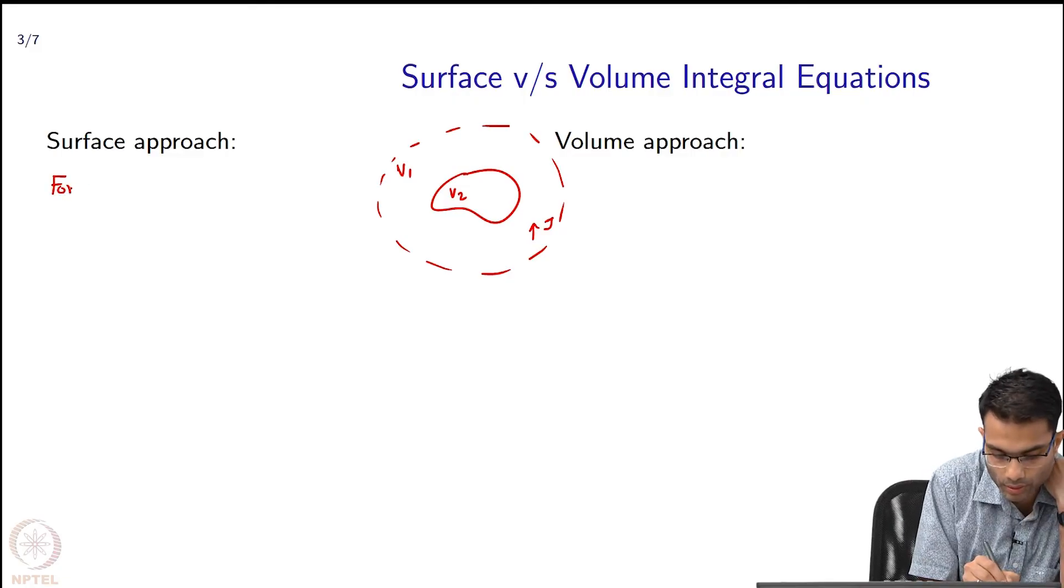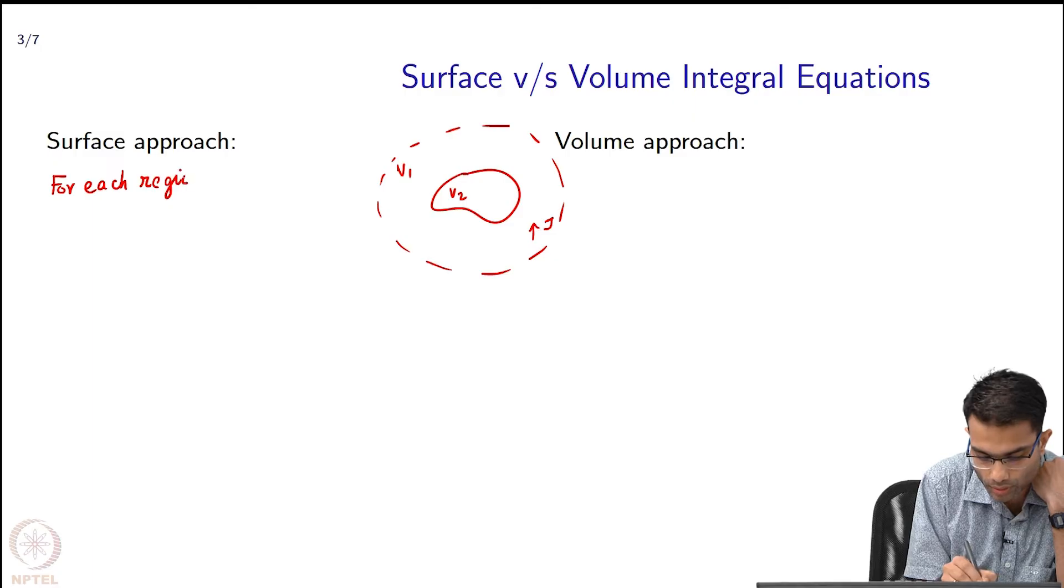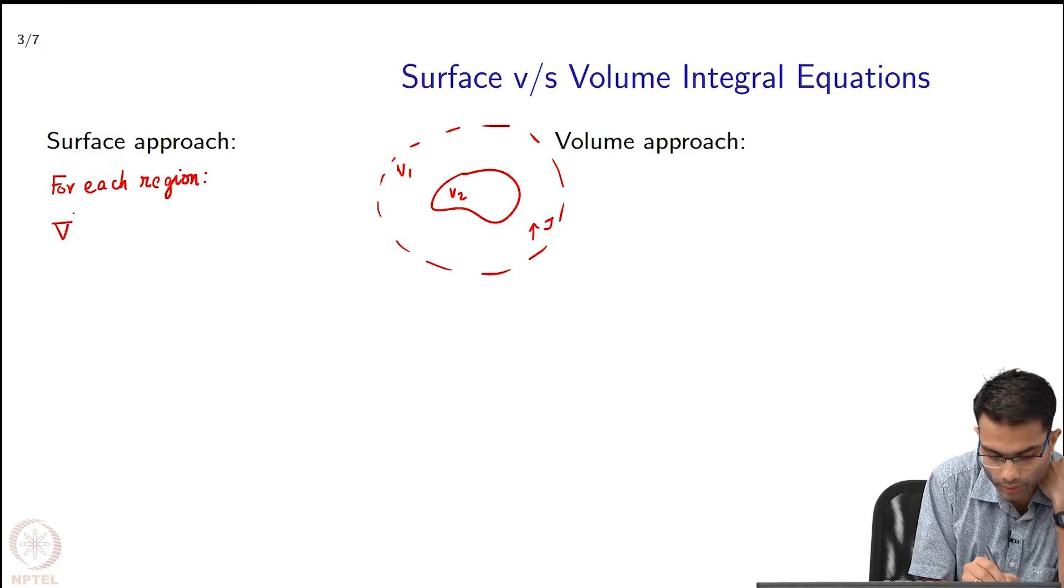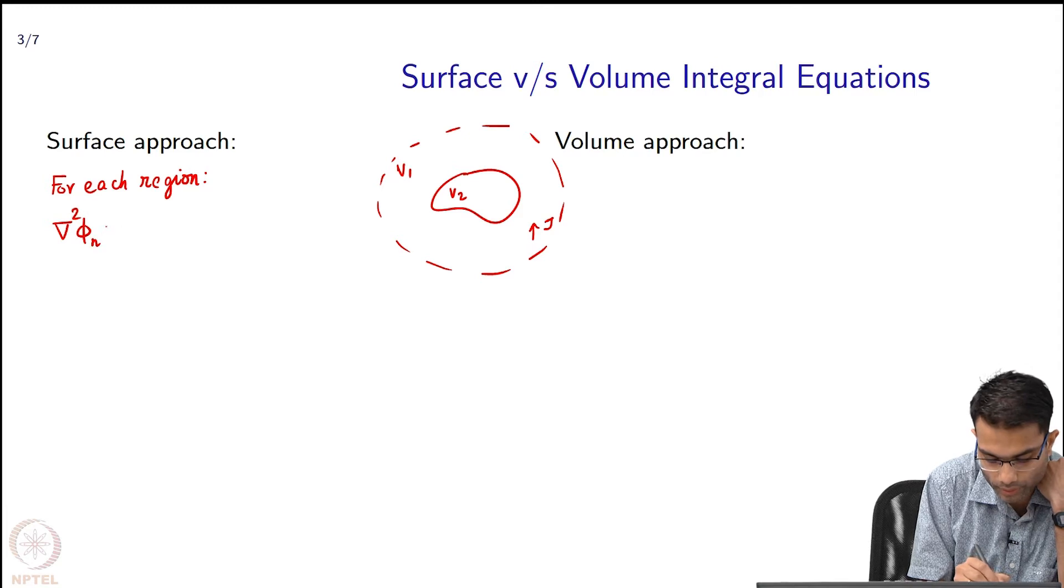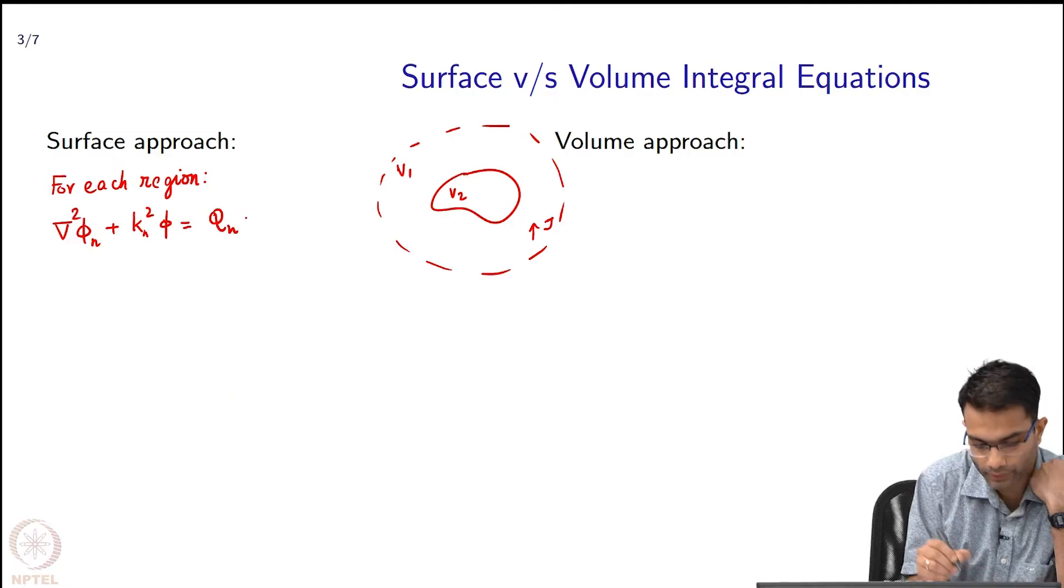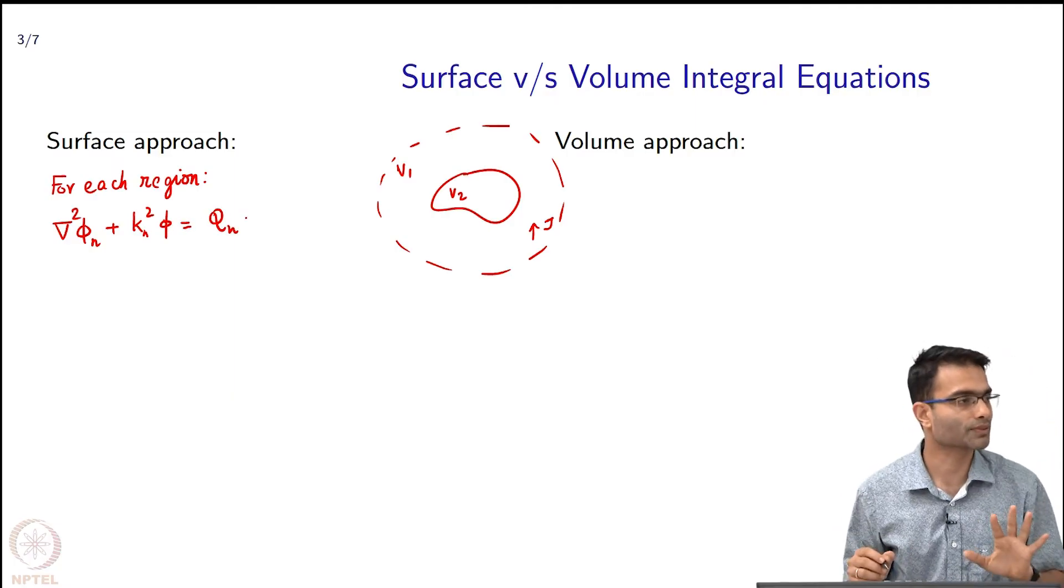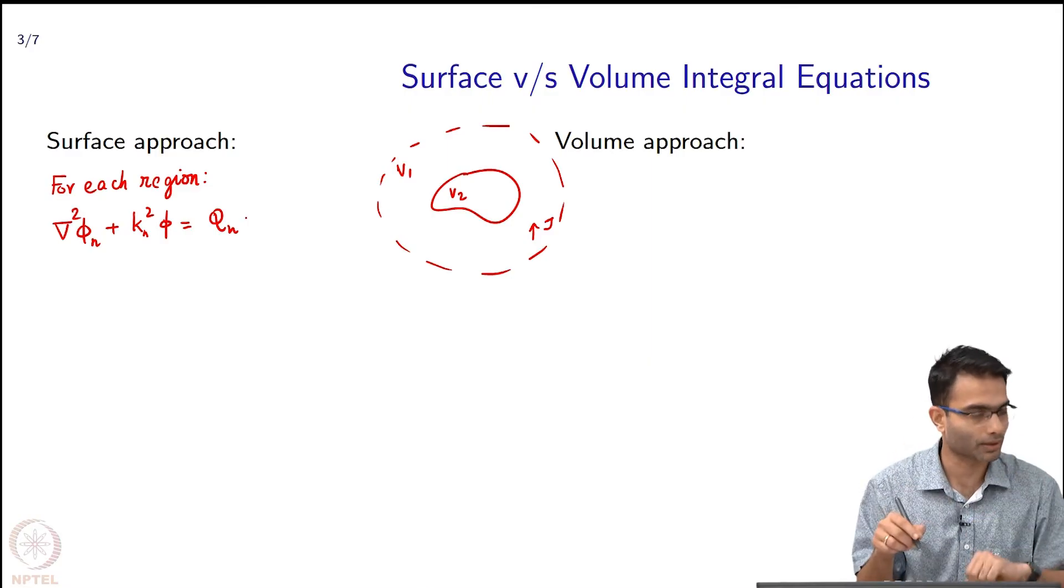For each region I wrote out, let us call it ∇² + kₙ² φ is equal to qₙ. These are all functions of space - I am not writing the bracket r explicitly.